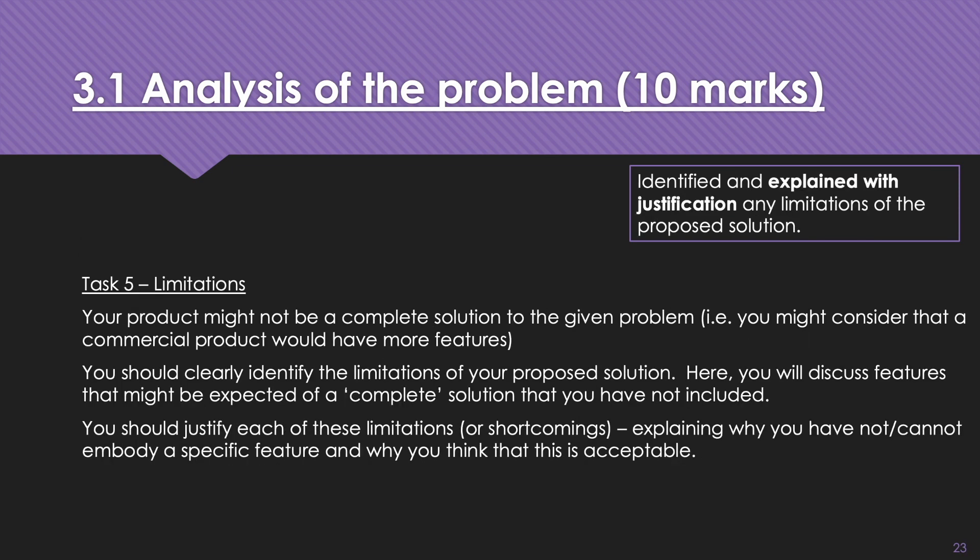The final task in this section is limitations. So identify and explain with justification any limitations of the proposed solution. So you're going to say, okay, I'm going to build you this, but due to the time constraints or my knowledge constraints or hardware constraints, it's not going to do this or this and this. So your product might not be a complete solution to the given problem. That is, you might consider that a commercial product would have more features. You should clearly identify the limitations of your proposed solution. Here, you will discuss features that might be expected of a complete solution that you've not included. So identify things. Don't be afraid to identify things that your product doesn't do. But you do have to justify or explain why these limitations exist. Explain why you have not and cannot embody a specific feature and why you think that's acceptable.